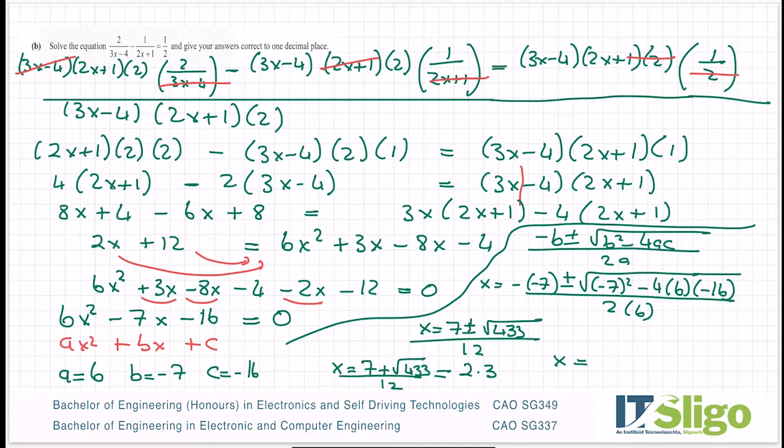And my next answer for x comes from 7 minus root 433 all over 12. So my calculator I'm just going back to change that plus sign to a minus, standard to convert it to a decimal. And I'm getting minus 1.15 on my calculator rounded. That's minus 1.2. So that's one way of doing that algebraic fraction.